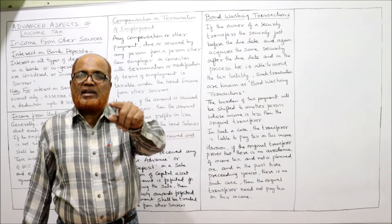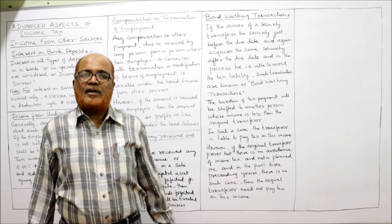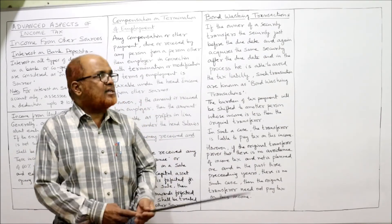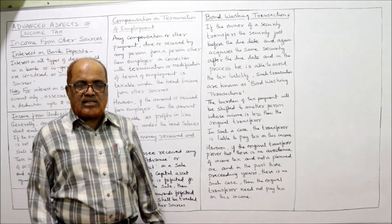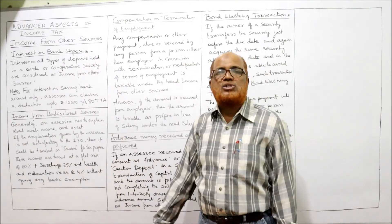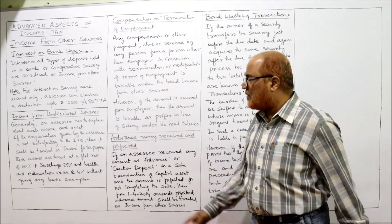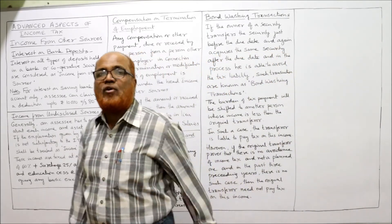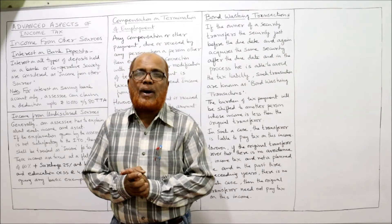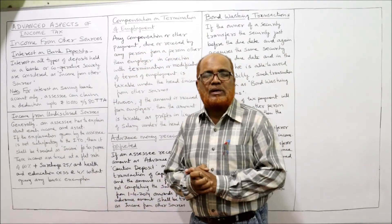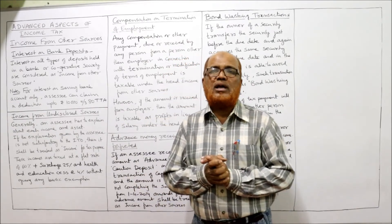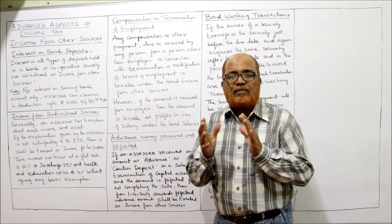This is the bond washing transaction. In this last video I have explained interest on bank deposit, income from undisclosed sources, compensation received on termination of employment, advance money forfeited, and lastly bond washing transaction. This is the end of the theoretical part of income from other sources, Unit Number 2. The next video will start the problems on income from other sources.